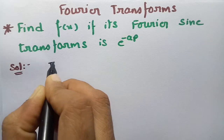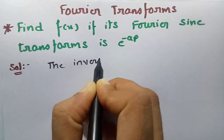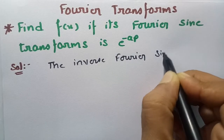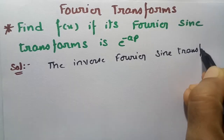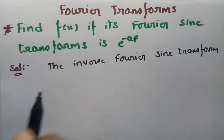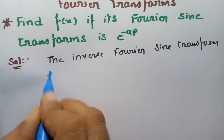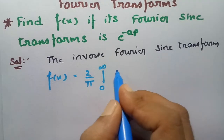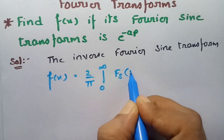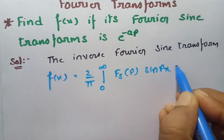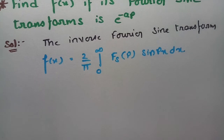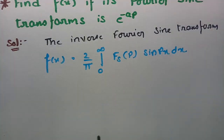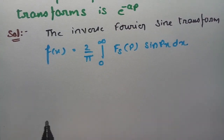Here, the inverse Fourier sine transform is given as f(x) = (2/π) times the integral from 0 to infinity of the Fourier sine transform of the function, multiplied by sin(px), dp. The Fourier sine transform Fs(p) is given as e^(−ax), so the function value is e^(−ax).